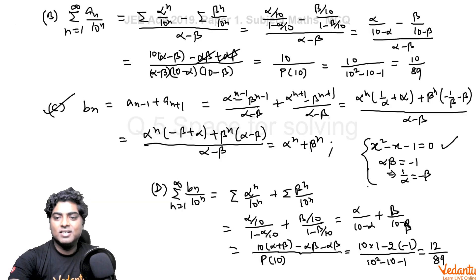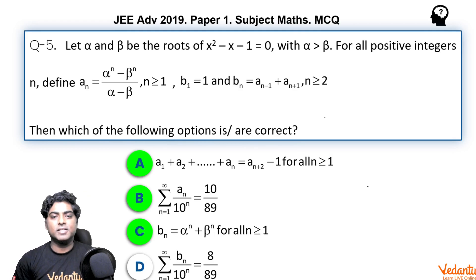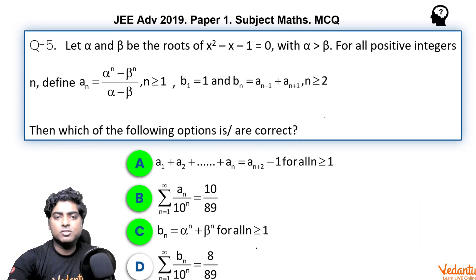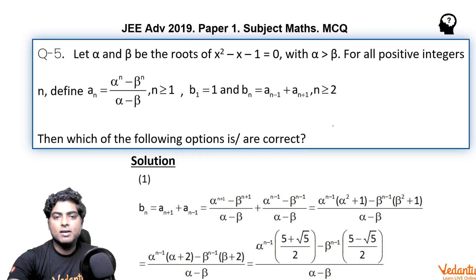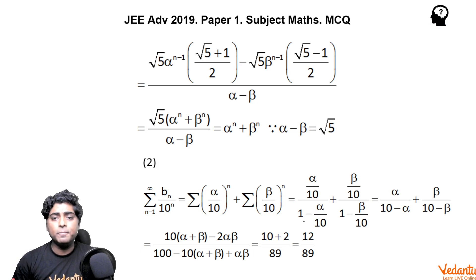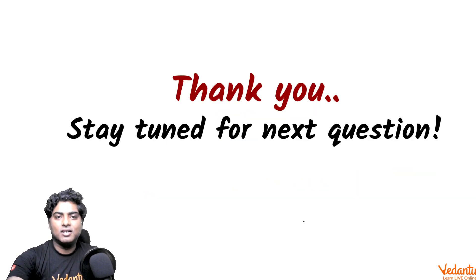So options A, B, and C are correct, while D is not correct. You can see the typed solution confirms the same — there may be minor differences in steps but the results are the same. I hope you understood the solution. Stay tuned for the next question. Thank you.